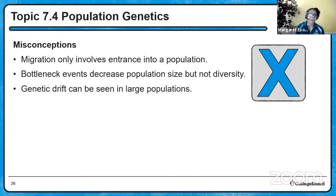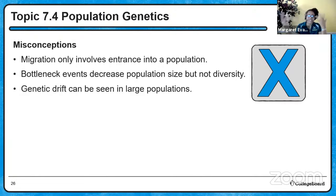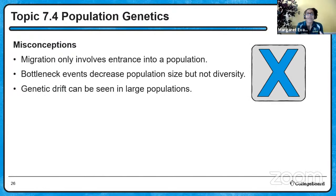Some misconceptions: Migration only involves entrance into a population - wrong; emigration with an E means exit out, and both leaving and entering can affect gene frequencies. Bottleneck events decrease population size but not diversity - typically bottleneck events will also decrease diversity, because severely reducing population size greatly chances that rich biodiversity within the population will also dramatically decrease. Genetic drift can be seen in large populations - actually, genetic drift effects like migration are much more visible in small populations than in very large ones.